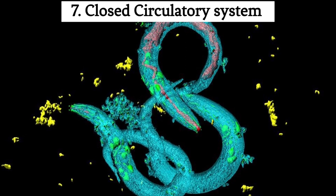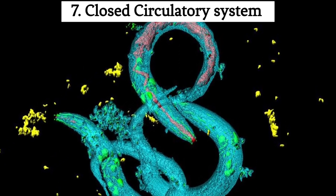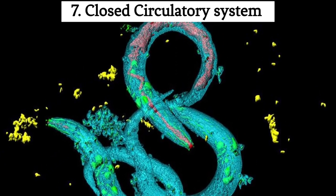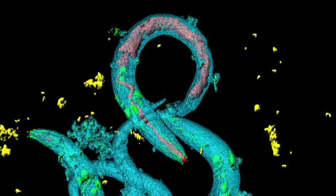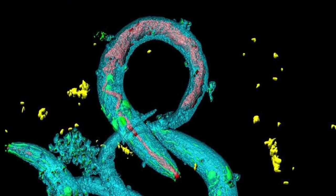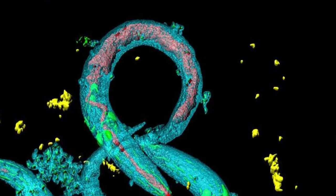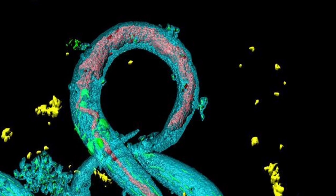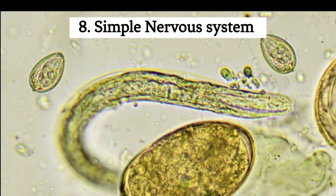7. Closed circulatory system. Unlike some simpler organisms, these worms have a closed circulatory system, with blood vessels that help distribute nutrients and oxygen throughout their bodies.